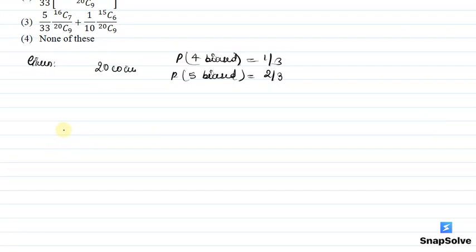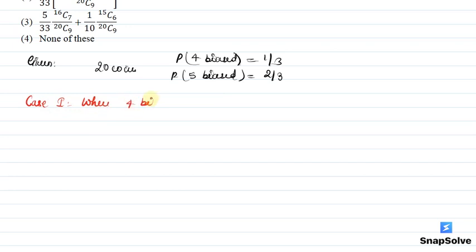अब यह दोनों probability हमें given हैं, तो 10 draws में सभी biased coins बाहर किस तरीके से होंगे? उसके लिए हमारे पास 2 cases बनेंगे। Case 1: when 4 biased coins are there.